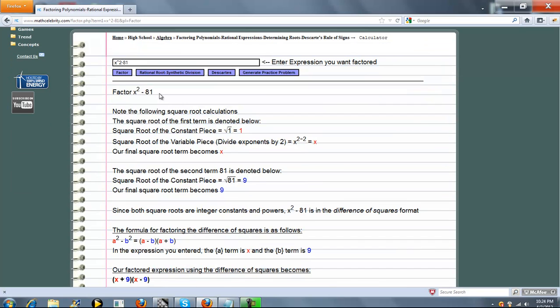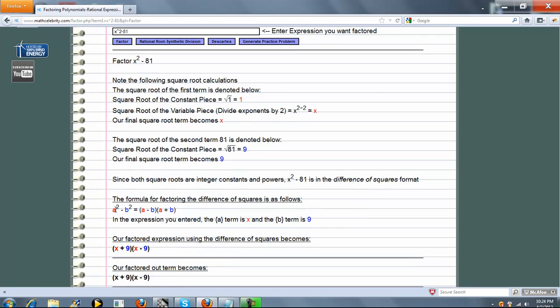Because this is a square term, the calculator figures out x squared—we can take the square root of it and get x, and then 81 we can take the square root and get 9. So we're factoring a difference of squares formula. The formula for that is a minus b, a plus b.